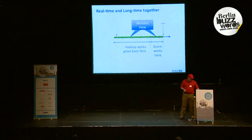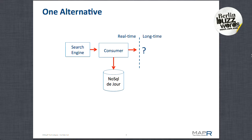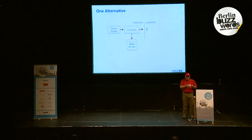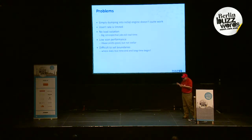One traditional way is to put some sort of search engine producing logs, then a consumer, then glue the NoSQL thing du jour — Cassandra, HBase, or something like that — and say we have real-time processing. We throw the data into a big pile for long-time. But there is no sense of accuracy in deciding what's in the NoSQL database versus the long-time database. You can do long-time queries and real-time queries, but you cannot join them easily. There is no provision for that boundary being well-defined.